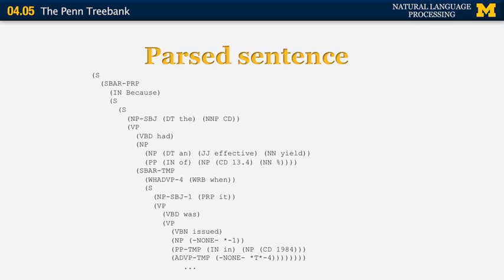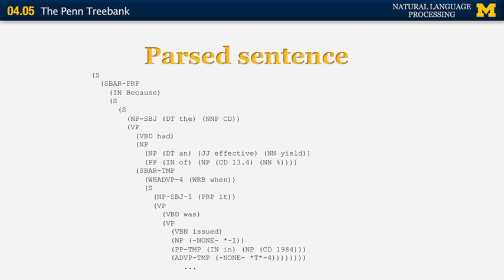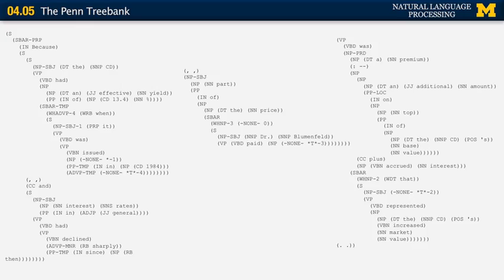This is the beginning of the sentence represented exactly as it appears in the Penn Treebank. You can recognize some non-traditional labels — for example, S-bar corresponds to the fragment of the sentence that starts with 'because', and you can have another S-bar corresponding to the time expression 'when it was issued'. The PP at the bottom of the screen 'in 1984' is labeled as PP-TMP, where TMP stands for temporal prepositional phrase that expresses time. This is the full parse tree for the sentence — it's very complicated and is read in three columns left to right.